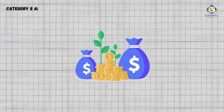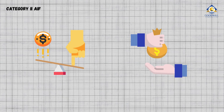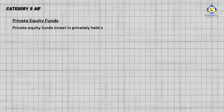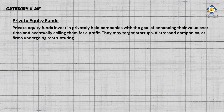Category 2 AIF covers those funds which do not take leverage or borrowings other than to meet day-to-day operational expenses. Private Equity Funds invest in privately held companies with the goal of enhancing their value over time and eventually selling them for a profit. They may target startups, distressed companies, or firms undergoing restructuring.